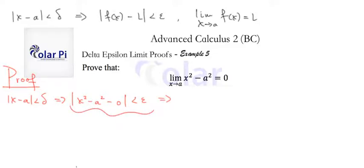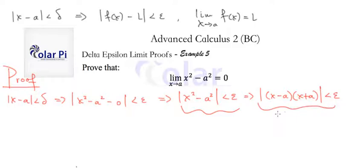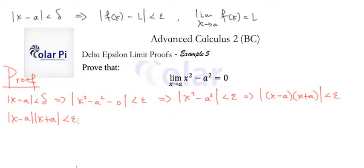First, note that the statement can be written as absolute value of x squared minus a squared is less than epsilon. We can rewrite it in factored form as absolute value of x minus a times x plus a is less than epsilon. It's just that x squared minus a squared factors this way. Using absolute value properties — as explained in previous examples — we have absolute value of x minus a times absolute value of x plus a is less than epsilon, and therefore absolute value of x minus a is less than epsilon divided by absolute value of x plus a.